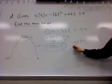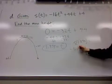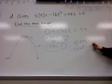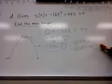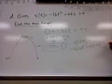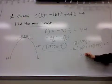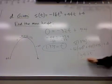Which would be negative 16 times 1.375 squared, plus 44 times 1.375, plus the 4. And that comes out to be the height of 34.25 feet.